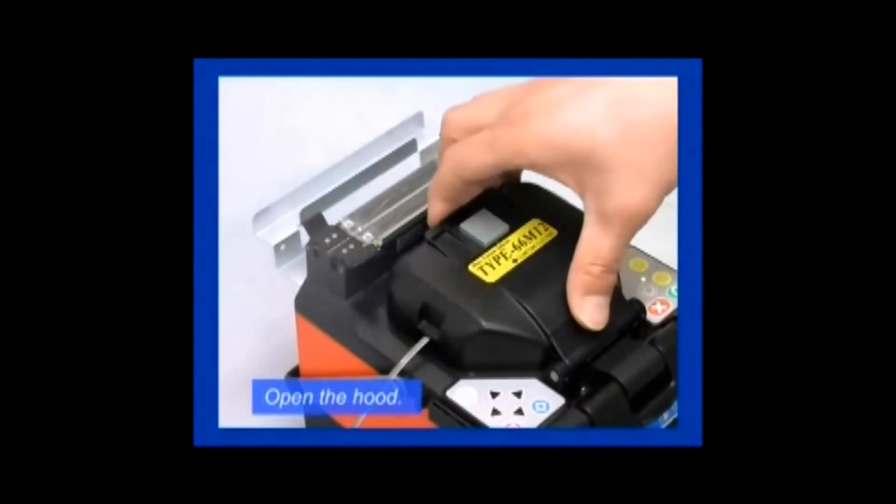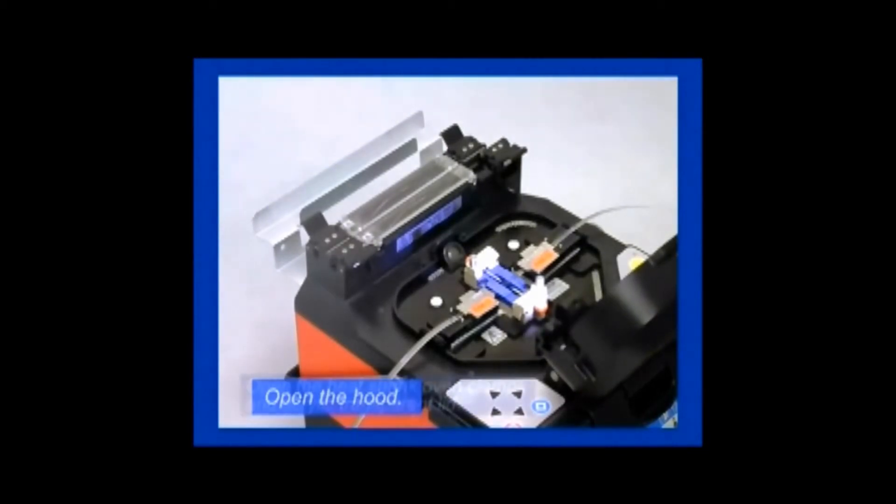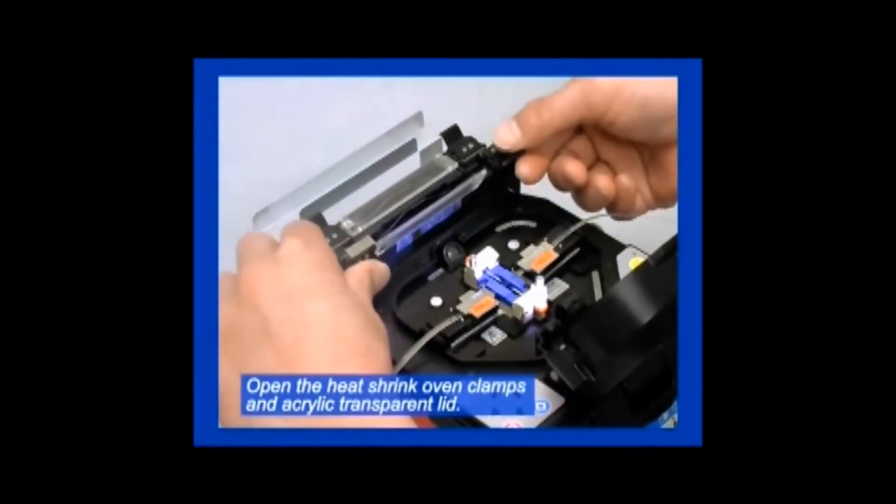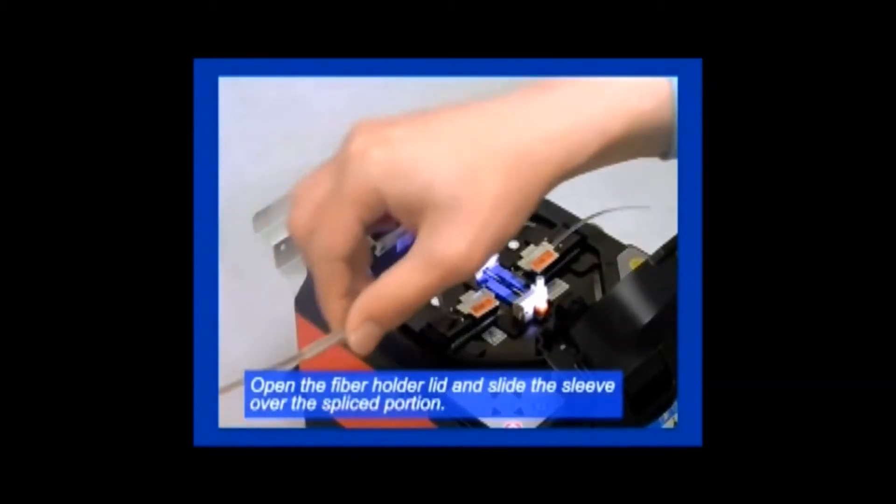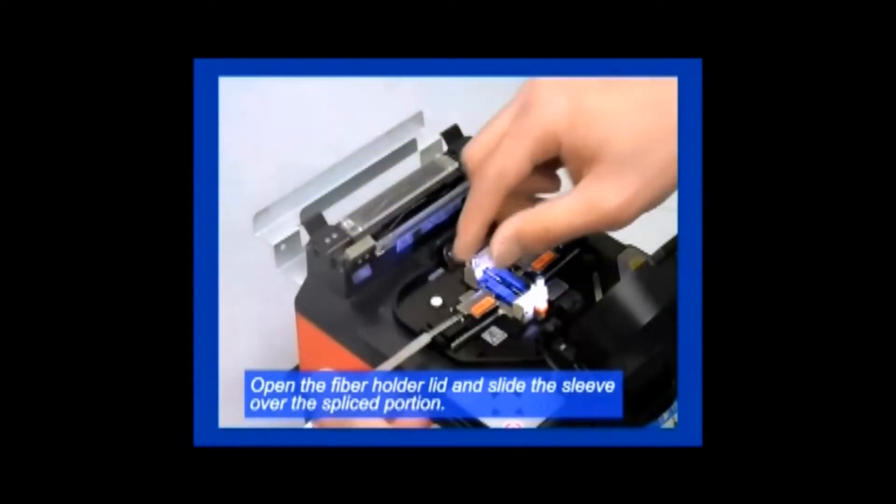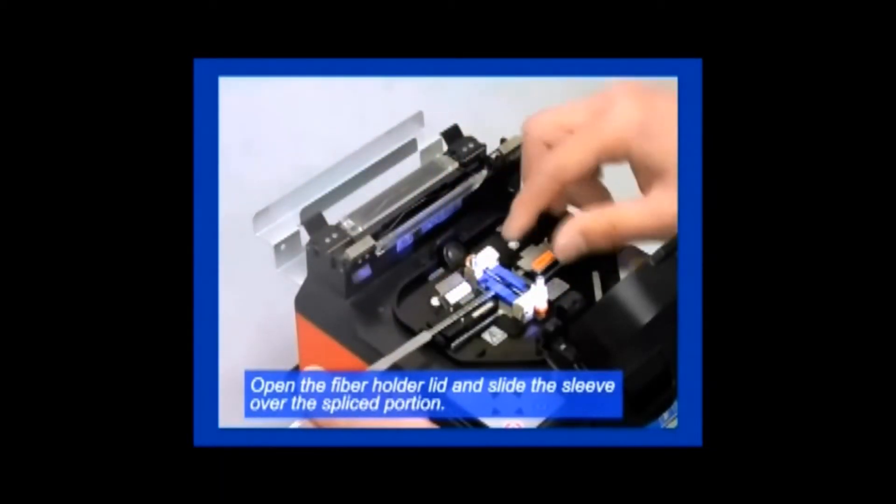The technician then works to reinforce the fiber splice by opening the hood on the splicer, opening the heat shrink oven clamps and acrylic transparent lid, opening the fiber holder lid and sliding the sleeve over the spliced portion of the two fiber ribbons that have been joined together.